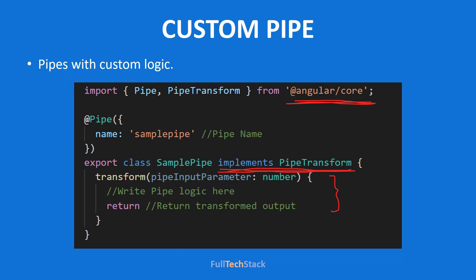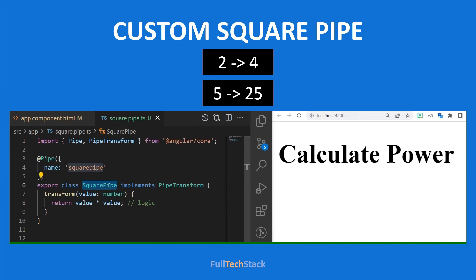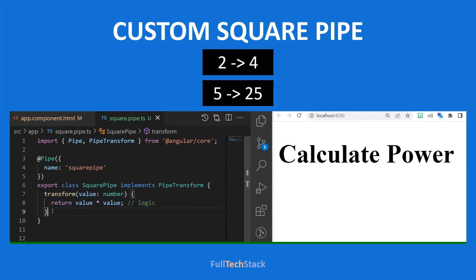Let us create a quick example. We are going to accept a number as input and return the square of the input number. Here we have created a class SquarePipe, decorated with the pipe decorator, and we have set the name of this pipe as 'squarePipe'. Remember, when we use a pipe we call it via the name provided in the pipe decorator, not the class name. Our class SquarePipe implements the PipeTransform interface and we have implemented the transform method which holds the logic for the transformation.